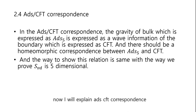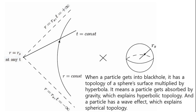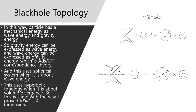Now I will explain ADS-CFT correspondence theory. In the ADS-CFT correspondence theory, the gravity expressed as ADS-5 is expressed as wave information of the boundary, which is expressed as CFT, and there should be a homeomorphic correspondence between ADS-5 and CFT. The way to show this relation is the same as the way we prove SVD is 5-dimensional. When a particle gets into a black hole, it has a topology of a sphere's surface multiplied by a hyperbola — meaning the particle gets absorbed by gravity, which explains hyperbolic topology, and the particle has a wave effect, which explains spherical topology. In this way, a particle has mechanical energy as both wave energy and gravity energy. So gravity energy can be expressed as wave energy, and wave energy can be expressed as gravity energy — which is ADS-CFT correspondence theory.